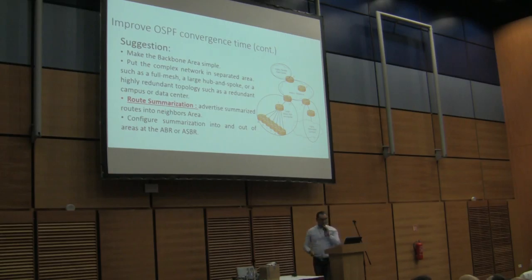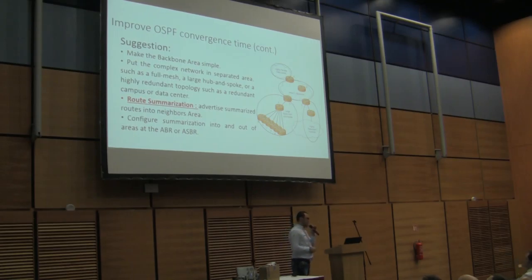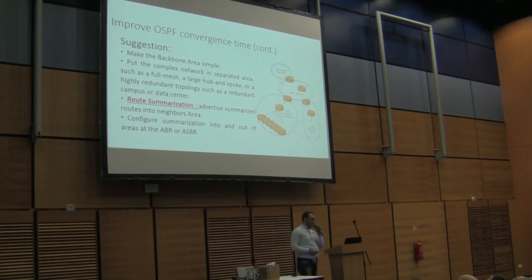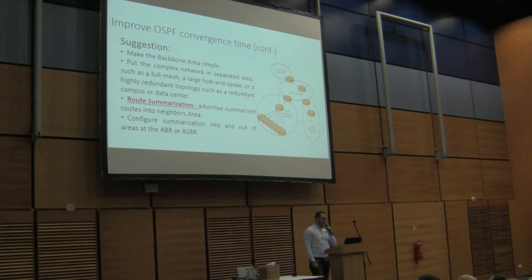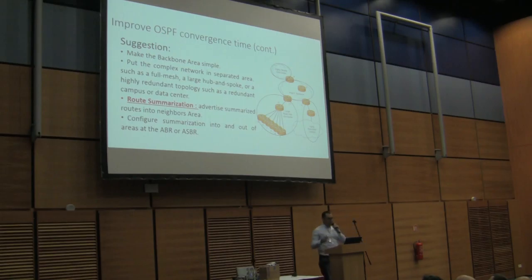Consider this three-tier network design: we have a core network and external connections with our access network. The suggestion is to make the backbone simple — not a lot of routes installed in the backbone. Put complex parts such as ISP hubs or full mesh networks of large campus networks in separate areas. This ensures only small routes are injected into our backbone area. It's very important to have route summarization at the ABR so that only summarized routes are exchanged between OSPF area neighbors.